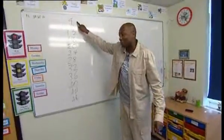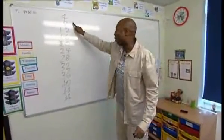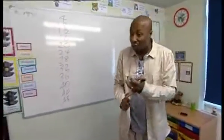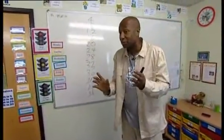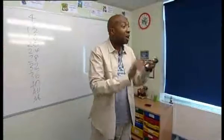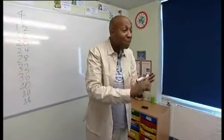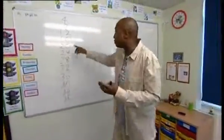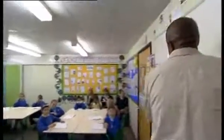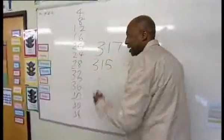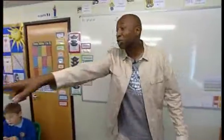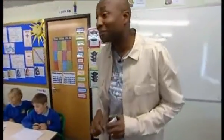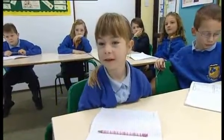Look at these numbers on the board. What is special about all of these numbers? They're all even. Good answer. Numbers in the four times tables have to be what? Even. Exactly. So multiples of four — numbers in the four times tables, numbers divisible by four — have to be even. What about this number, 315? Yes or no? No. Why not? Because it's odd. Good girl. Lovely answer.